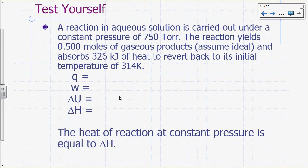Let's look at this example. Suppose you have a reaction in aqueous solution carried out under constant pressure of 750 Torr, and the reaction produces 0.5 moles of gaseous products, assumed ideal. In the process, it absorbs 326 kilojoules of heat to revert back to its initial temperature of 314 Kelvin. So what's our q here? It absorbs — positive 326 kilojoules.